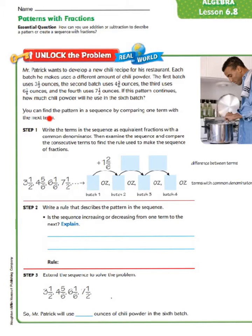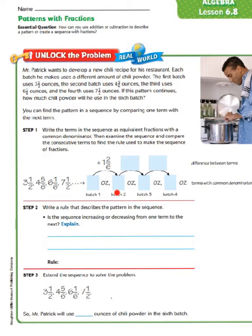You can find the pattern in a sequence by comparing one term with the next term. Step 1 says to write the terms in the sequence as equivalent fractions with a common denominator. Then examine the sequence and compare the consecutive terms to find the rule used to make the sequence of fractions. So we begin with our 3 and 1/2, our 4 and 5/6, our 6 and 1/6, and our 7 and 1/2, and we're going to create equivalent fractions for each one of those.